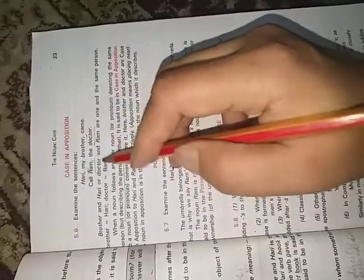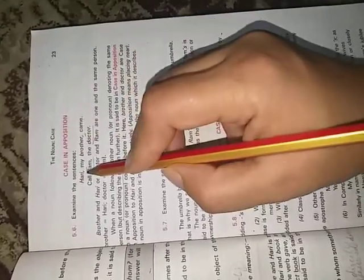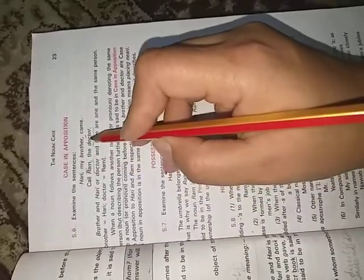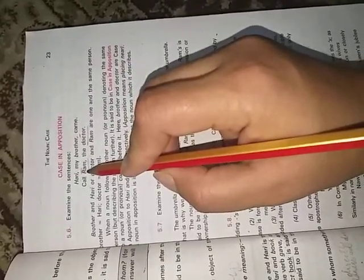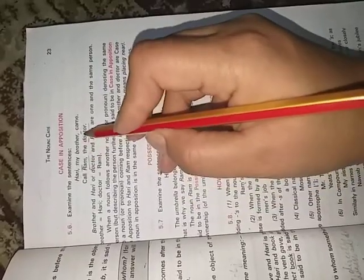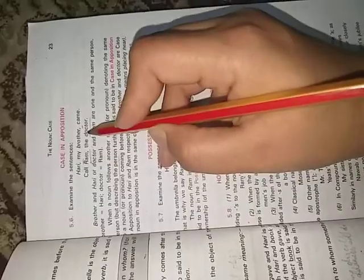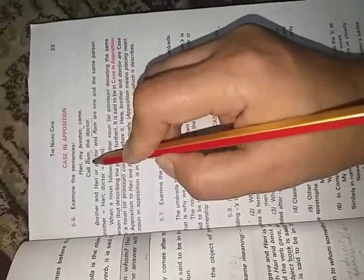Now look at here. I have here commas: call Ram, comma, the doctor. The doctor is the same person, Ram. So this is another designation given to Ram. So here they both are nouns but referring to the same person. Then it is called case in apposition.